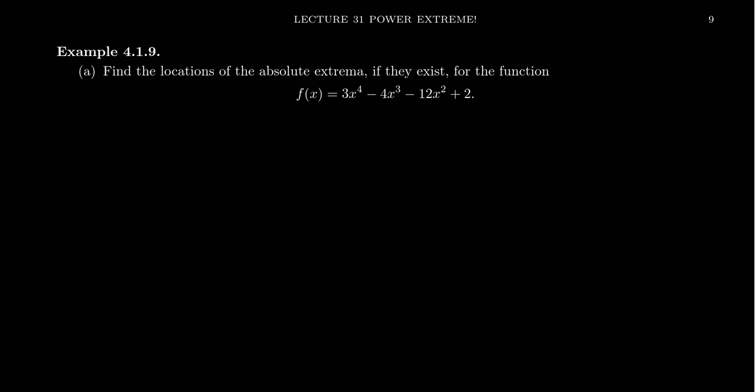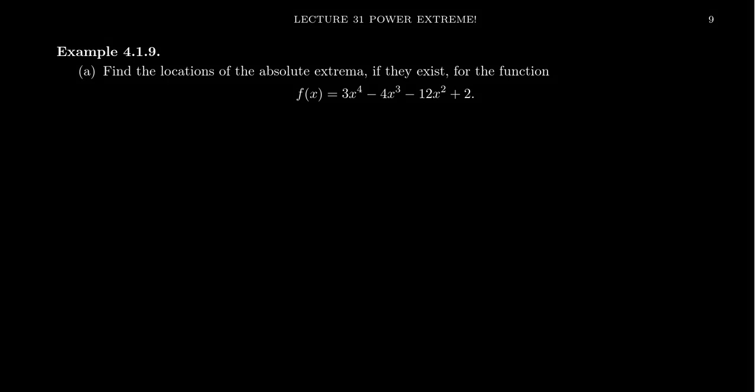One thing I want to mention is if we just looked at the end behavior of this function, if we took the limit as x approaches plus or minus infinity of f(x), because it's a polynomial function, this will be the same as taking the end behavior of its leading term, 3x to the fourth, as x approaches plus or minus infinity, for which case in both cases this will go off towards infinity.